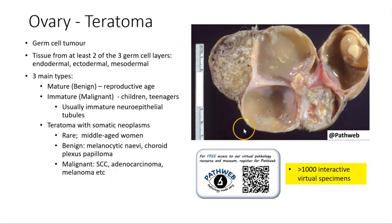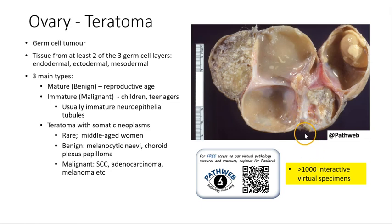Here is a gross picture of a specimen taken from PathWeb. PathWeb is our free online pathology resource. You can find many annotated gross and macroscopic pictures in our virtual pathology museum, which contains more than 1,000 interactive virtual specimens such as the one you just saw. Registration is free, and the link is in the video description.